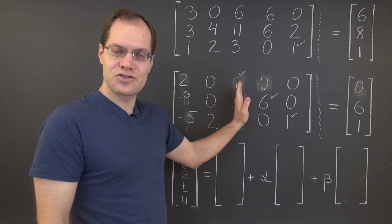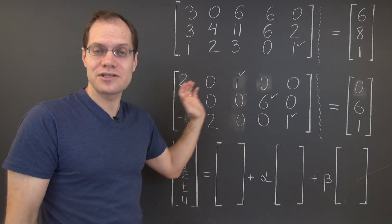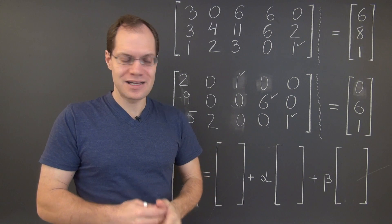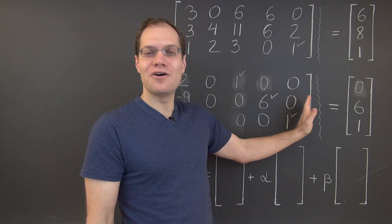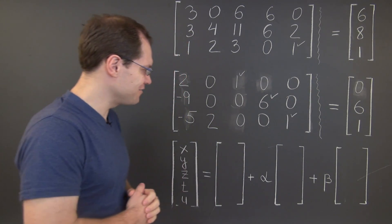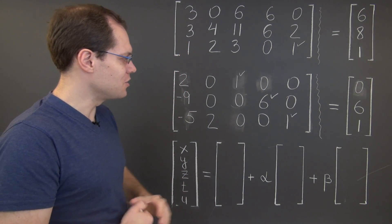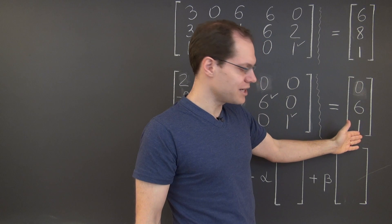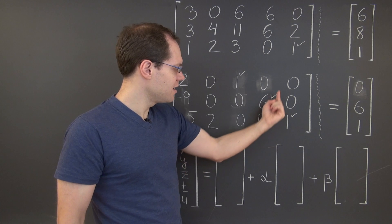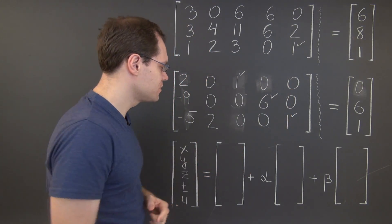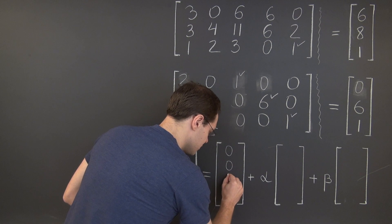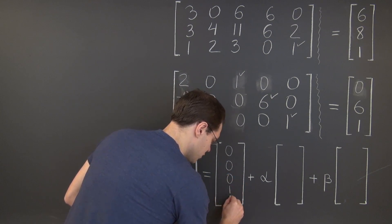Instead of using the first three columns as usual, we'll use our three pivot columns, but now they appear all the way to the right of the matrix. In order to decompose the right-hand side in terms of these columns, we need to take 1 of column 4 and 1 of column 5. So our particular solution is 0, 0, 0, 1, 1.